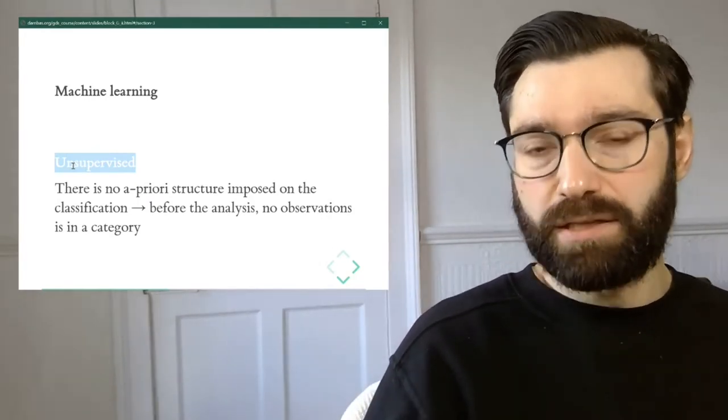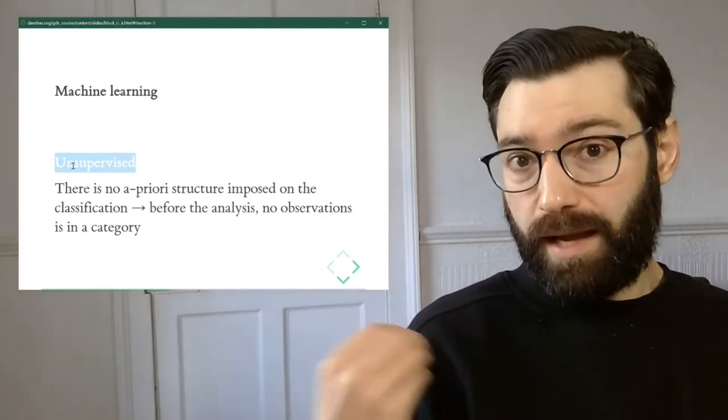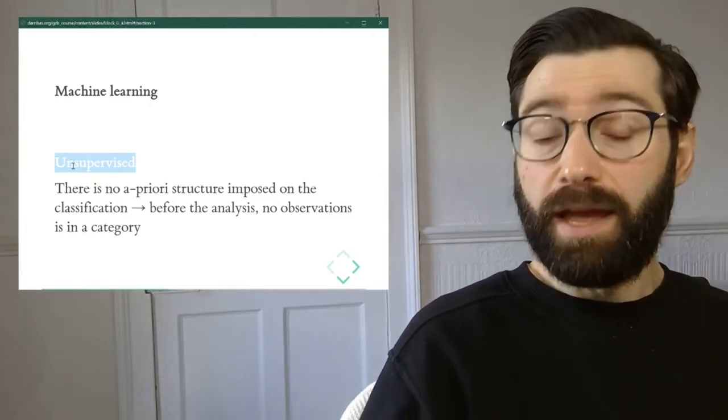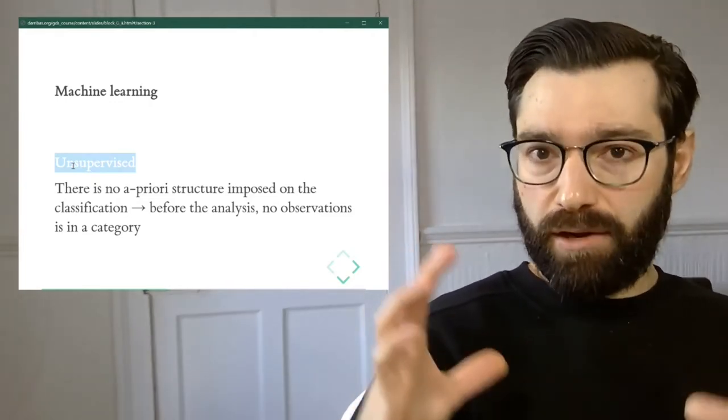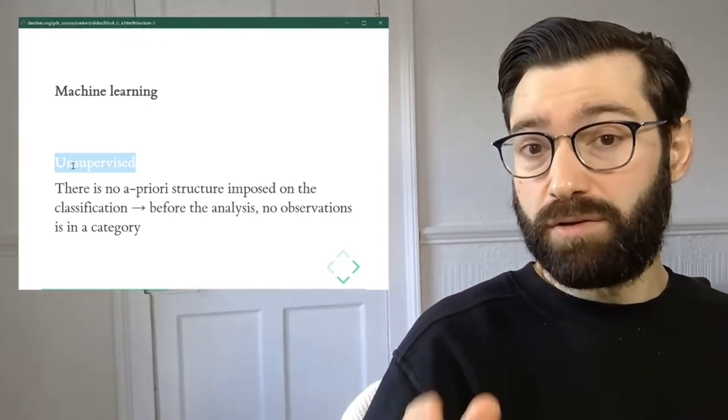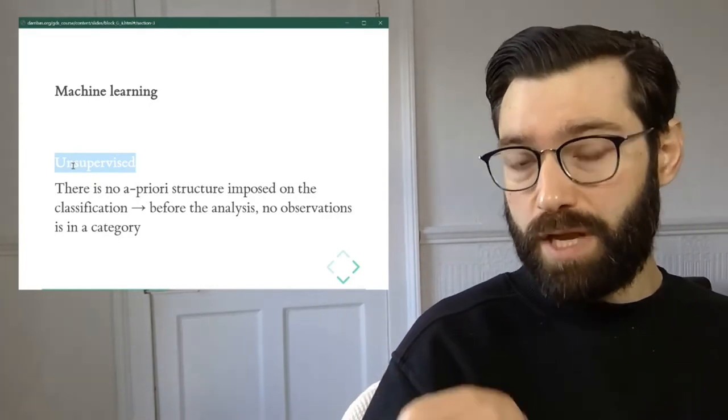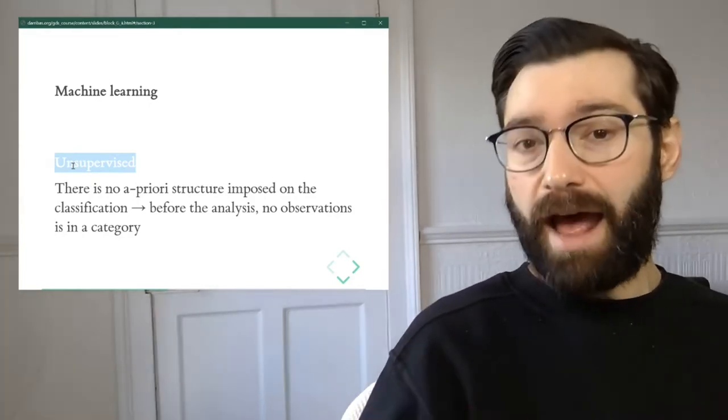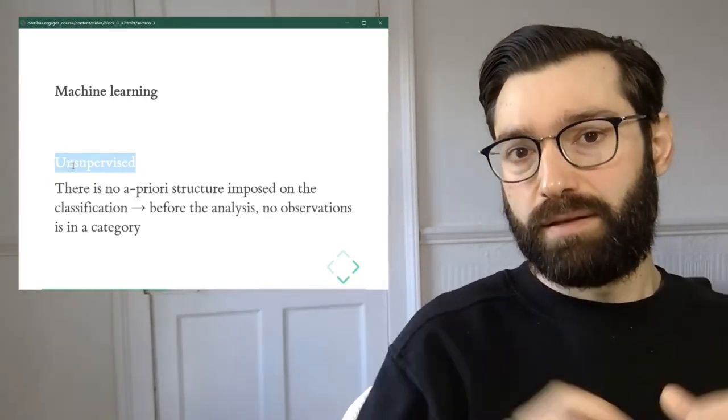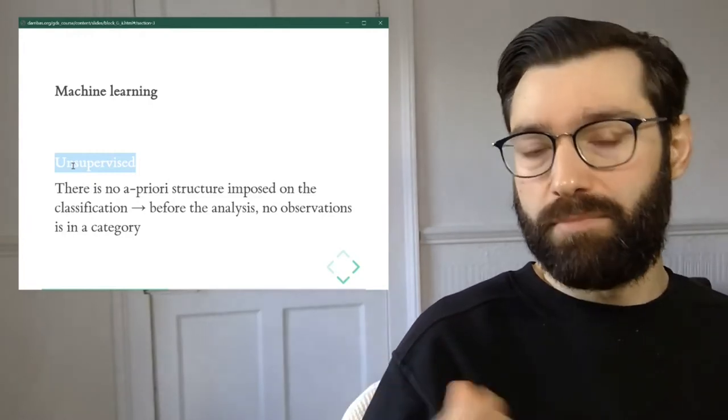When we run an unsupervised algorithm, we don't tell the computer what are the types or categories we want to identify. We will say how many clusters we want, but we won't tell the computer what are the types. Instead, what we will say is here is a table with my data, which represents observations measured along several characteristics. I want you to identify these categories for me. And this identification is going to be done in an unsupervised way in the sense that the computer will be able to identify them by themselves.